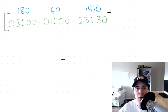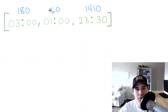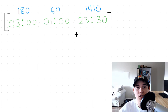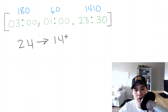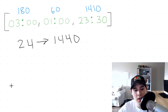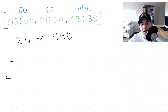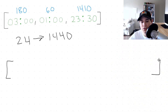The second part of this problem is to map all of these integer values into an array using what's known as bucket sort. There are a total of 24 hours in a day, which equates to 1,440 minutes. So we want to create an array of that size, going all the way up to 1,440.